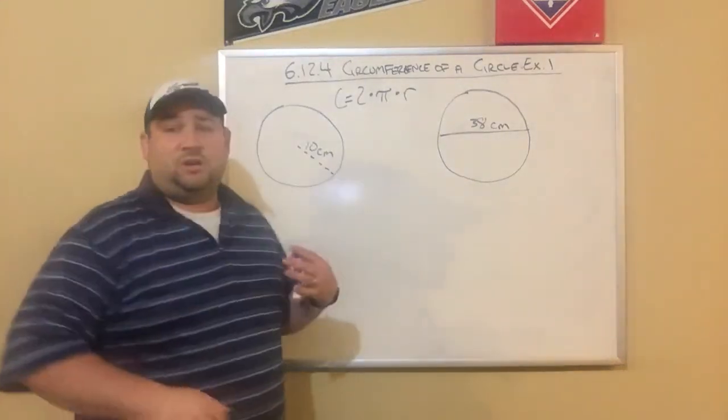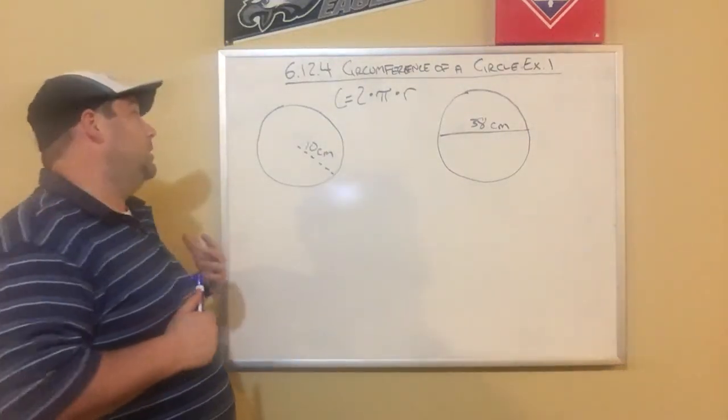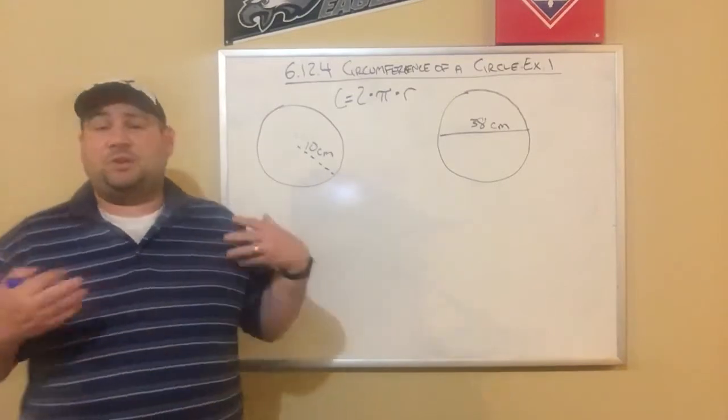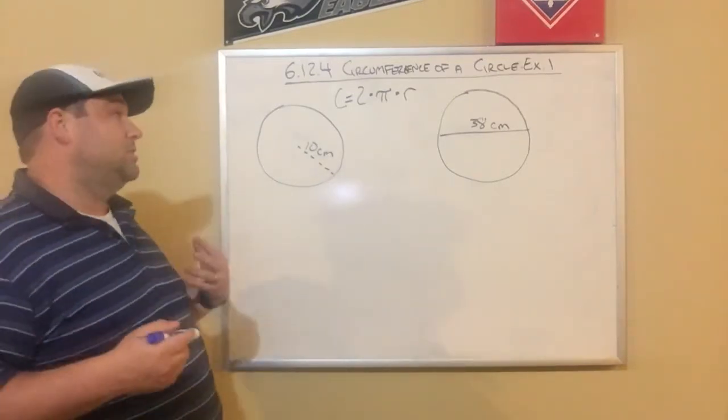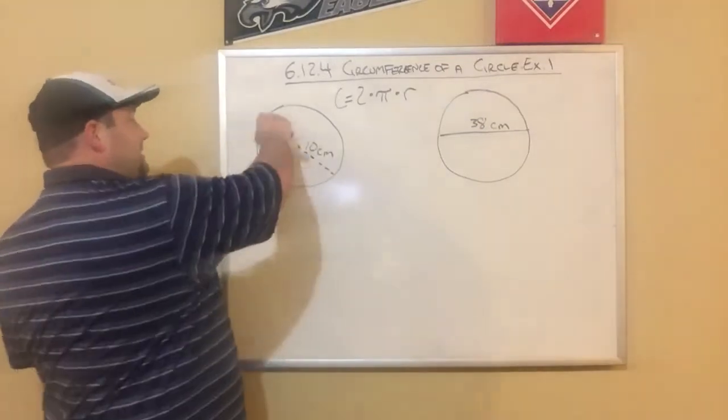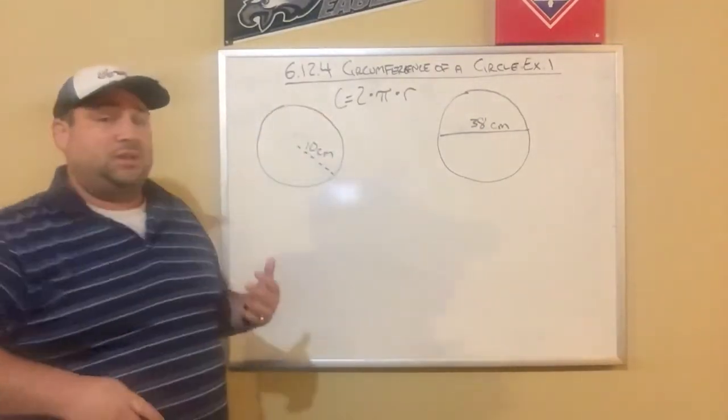Okay, so we're talking about circles. Specifically, we're going to talk about circumference of circles. Circumference is like the perimeter of a circle. It's the distance around a circle.